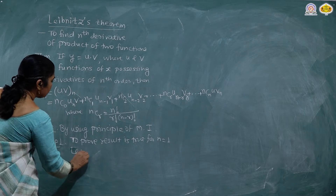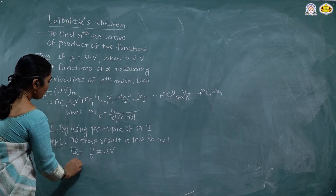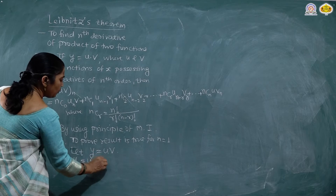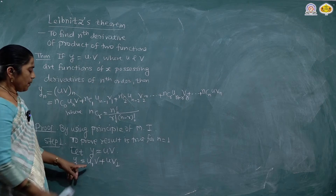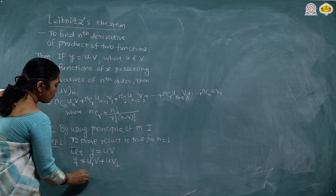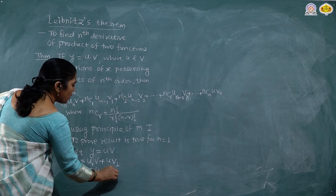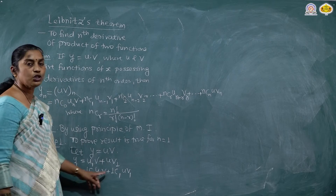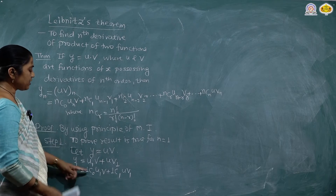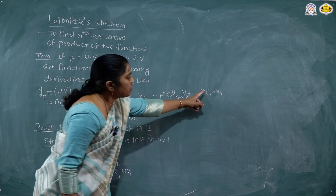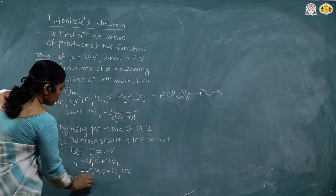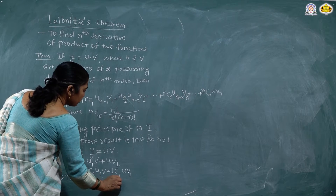So if y is equal to uv, what is the first derivative y1? By the product rule, y1 is nothing but the derivative of u times v plus u times v1 — that is, u1·v plus u·v1. We can write this as 1C0·u1·v plus 1C1·u·v1, since 1C0 and 1C1 both equal 1. Observe that if you put n equal to 1 in the formula, you get the same result: 1C0·u1·v + 1C1·u·v1. This implies the result is true for n equal to 1.